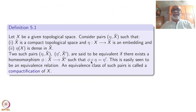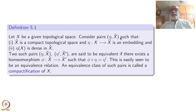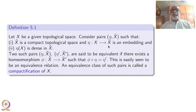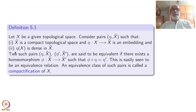Let's start with a topological space X. Consider an ordered pair (η, X̃), where X̃ is first of all a compact topological space and η is a map from X to X̃ which is an embedding. You can use η to identify X with a subspace of X̃. The second condition is that this subspace η(X) is dense in X̃. With these two conditions, we are taking care of all three aspects: X̃ is compact, η makes X into a subspace of X̃, and η(X) is dense.